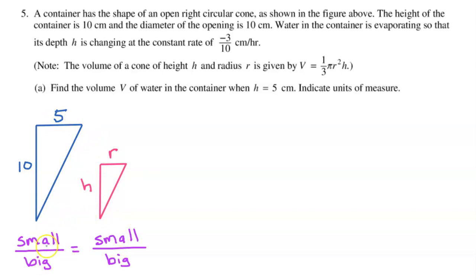You can easily use corresponding sides to set up a proportion if you follow a pattern like small over big equals small over big. For example, small over big would be R over 5. And that should equal another small over big. In this case, H over 10.